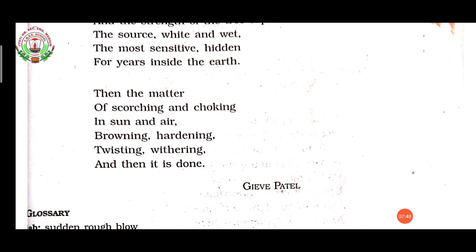Here the poet wants to say that once the tree has been uprooted, then gradually it withers and dries up with the action of heat and wind. After getting exposed, the tree gets faded away — it gets hardened, twisted, and then dried up completely. It is completely killed. 'And then it is done' — after the killing of a tree is done.